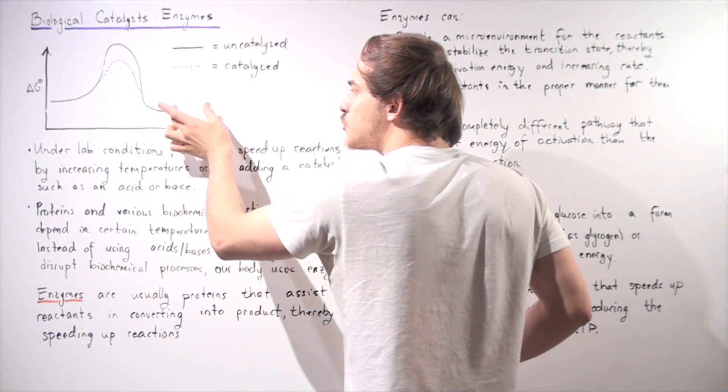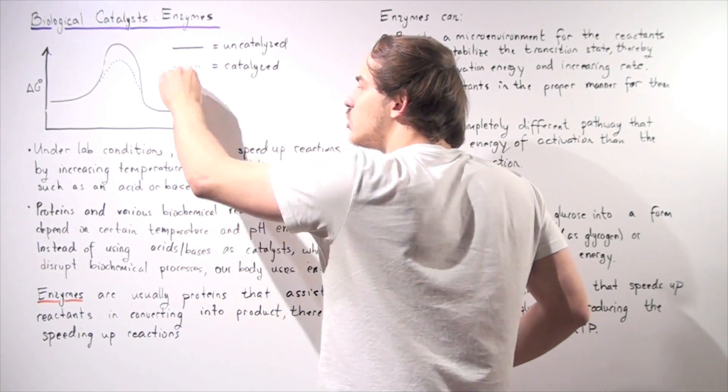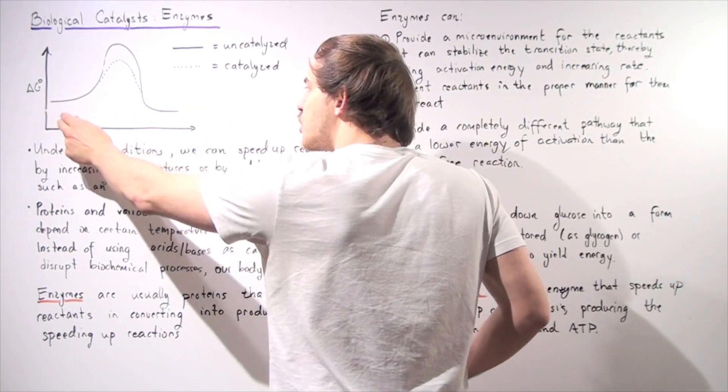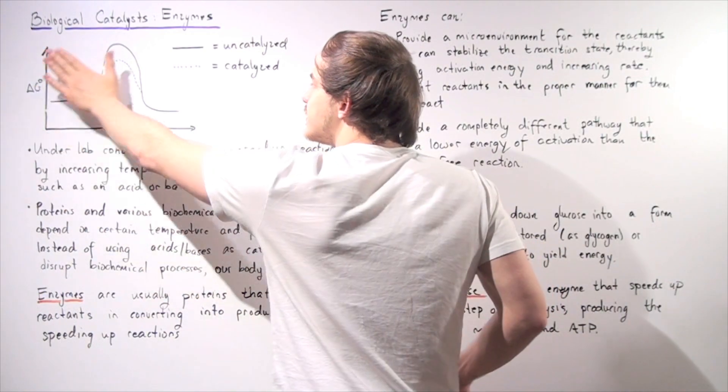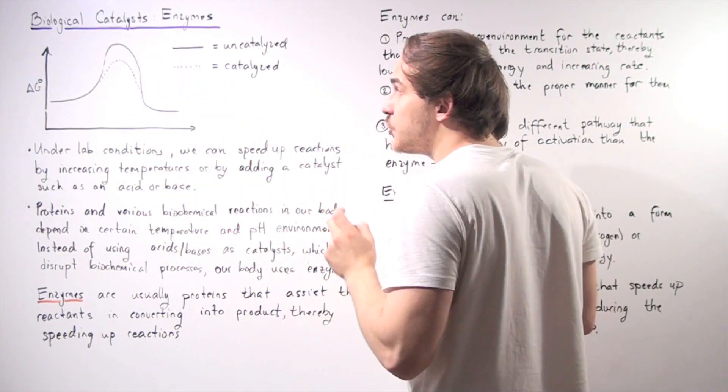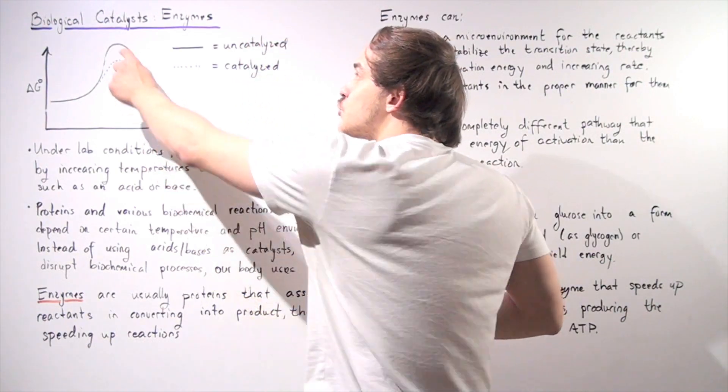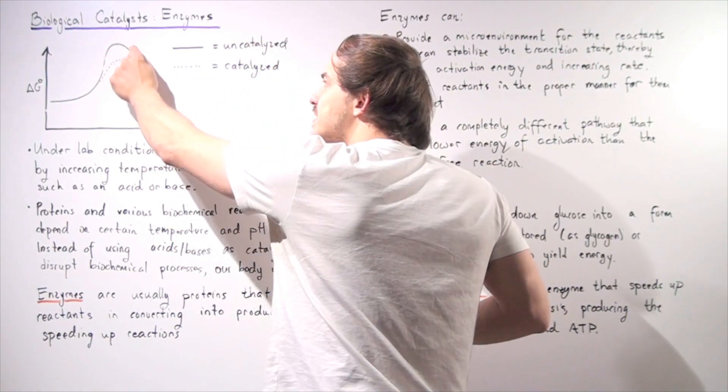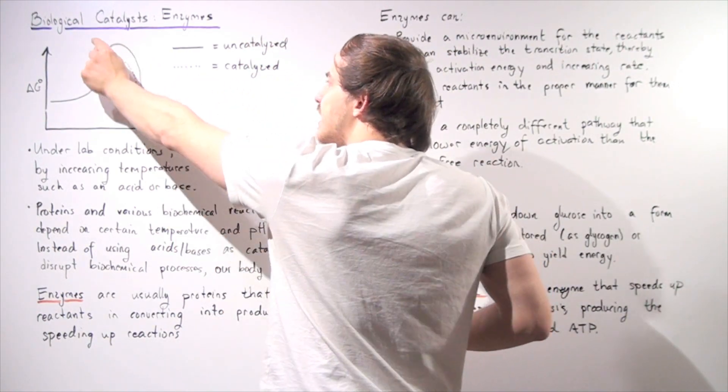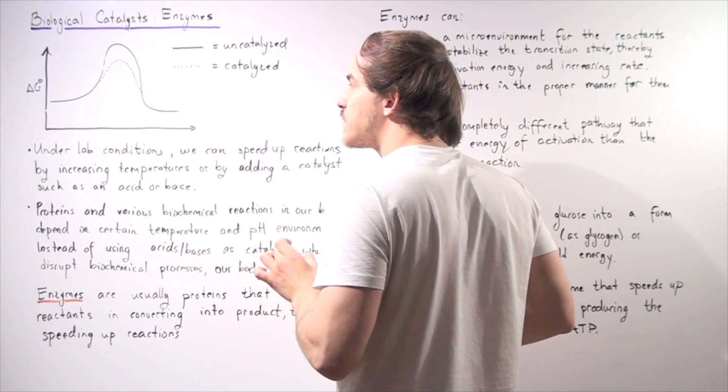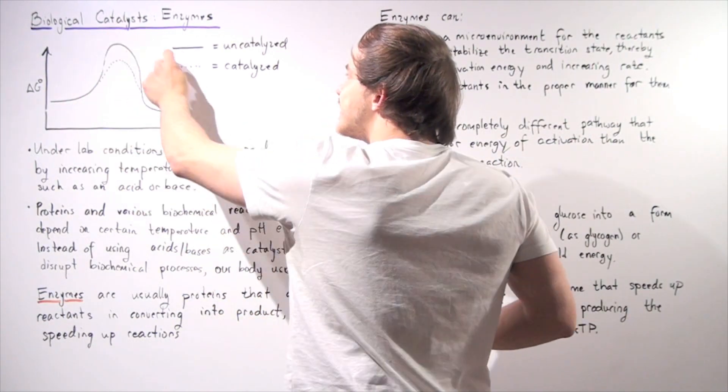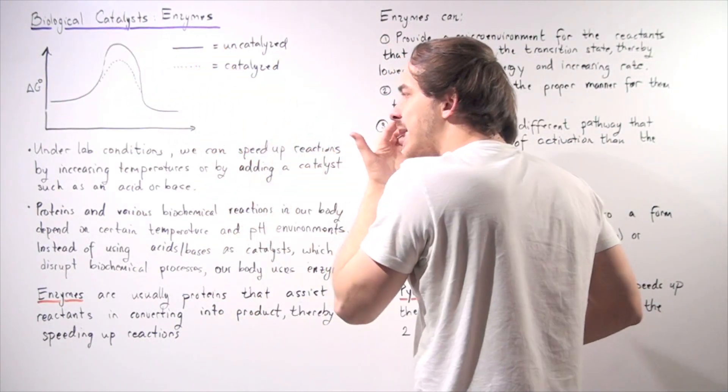Our reactants are converted to products, so products are lower in energy than our reactants, so this must mean this is an exergonic reaction. But notice, this hump, this mountain is our transition state. So this is the energy of our transition state, it's an energy maxima. And this solid line is our uncatalyzed reaction.